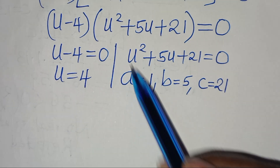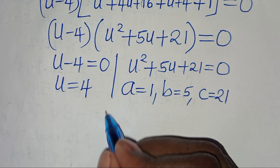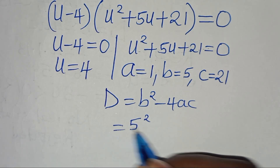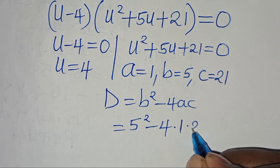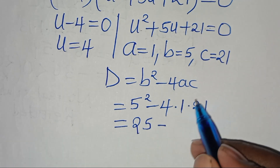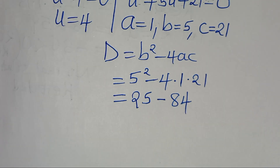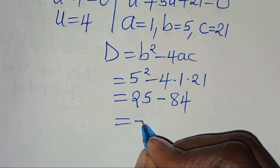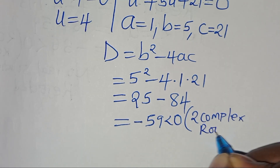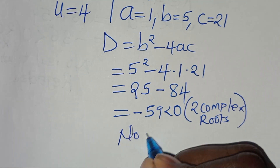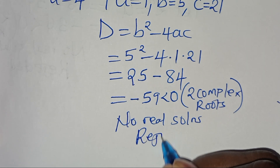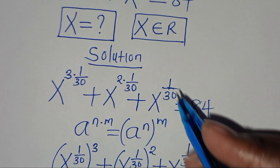The next step is to assess the nature of the roots of this quadratic equation by determining the discriminant: b squared minus 4ac. That gives us 5 squared minus 4 times 1 times 21, which is 25 minus 84, equals minus 59, which is less than 0. This implies we have two complex roots — no real solution can be obtained from this quadratic, so it is rejected since x is a member of real numbers.